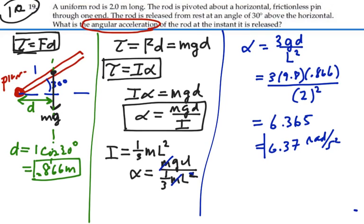So that is the initial angular acceleration of this rod at a 30-degree angle, due to the one torque of gravity acting on its center of mass causing the angular acceleration about the pivot point: 6.37 radians per second squared.